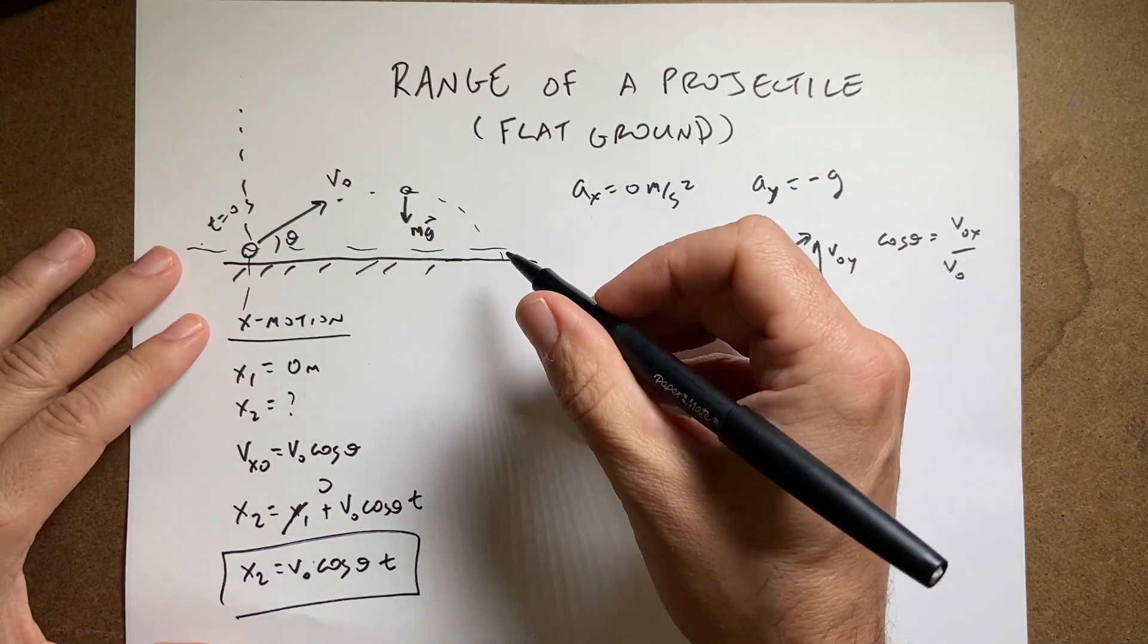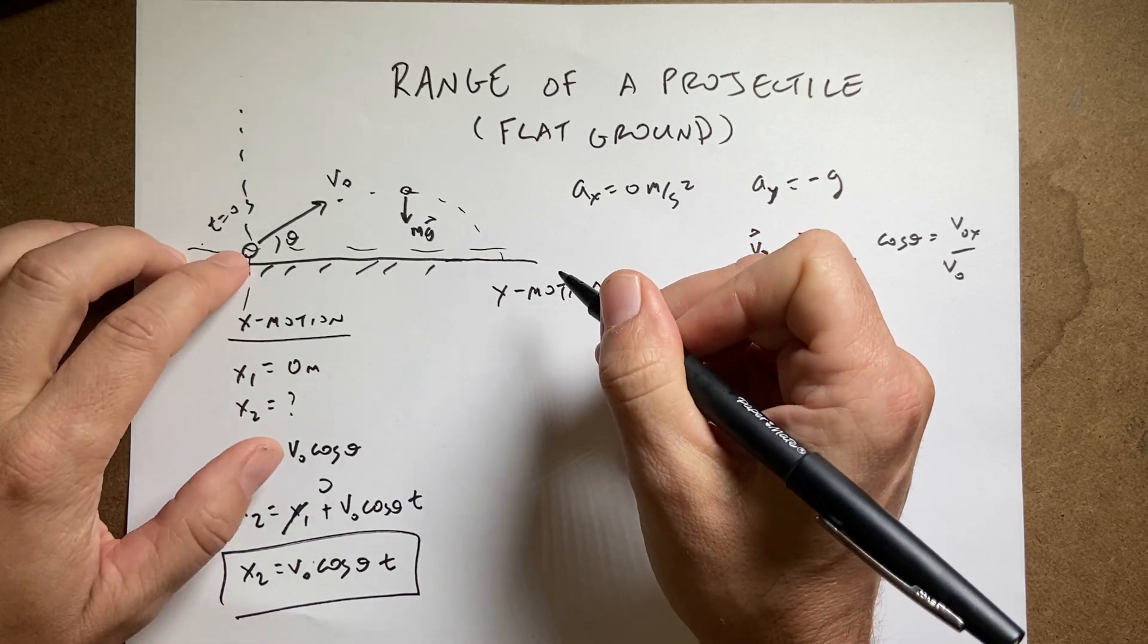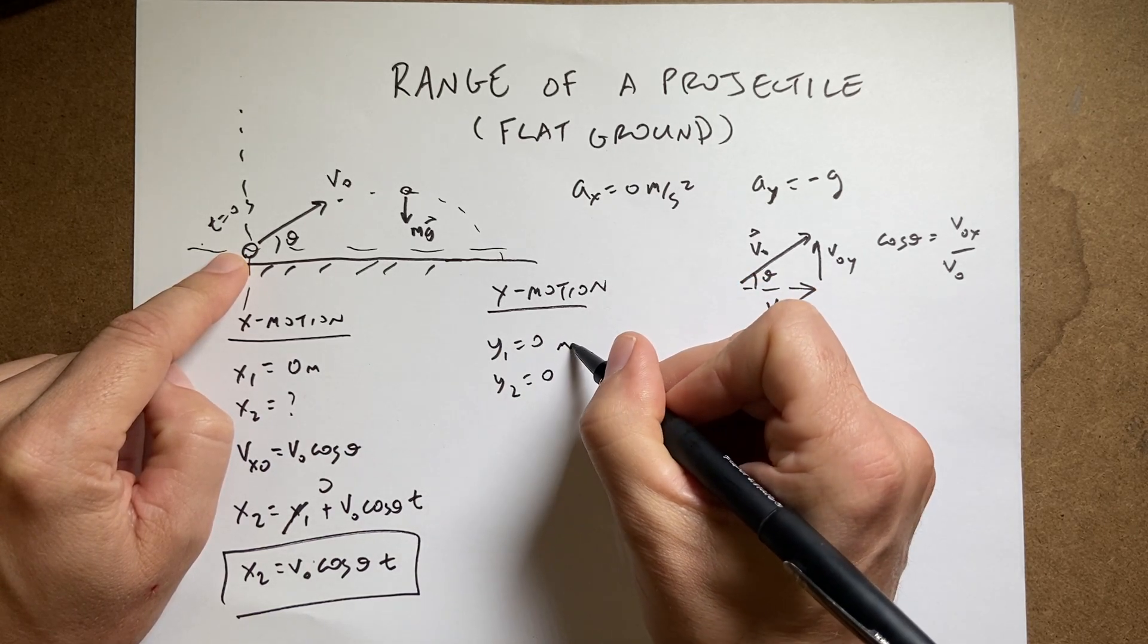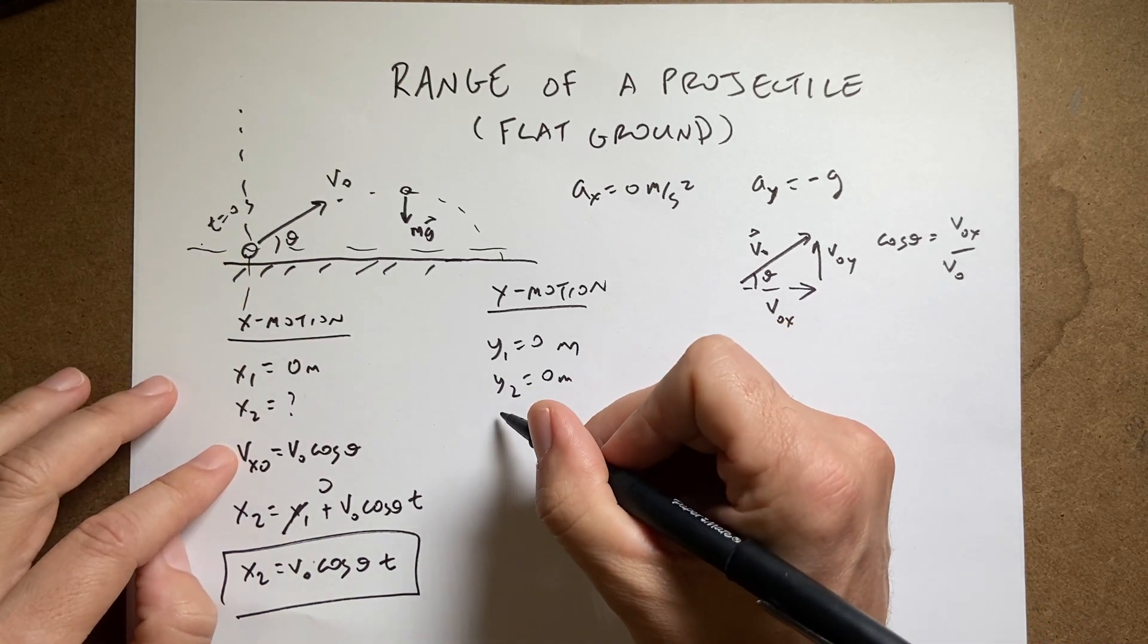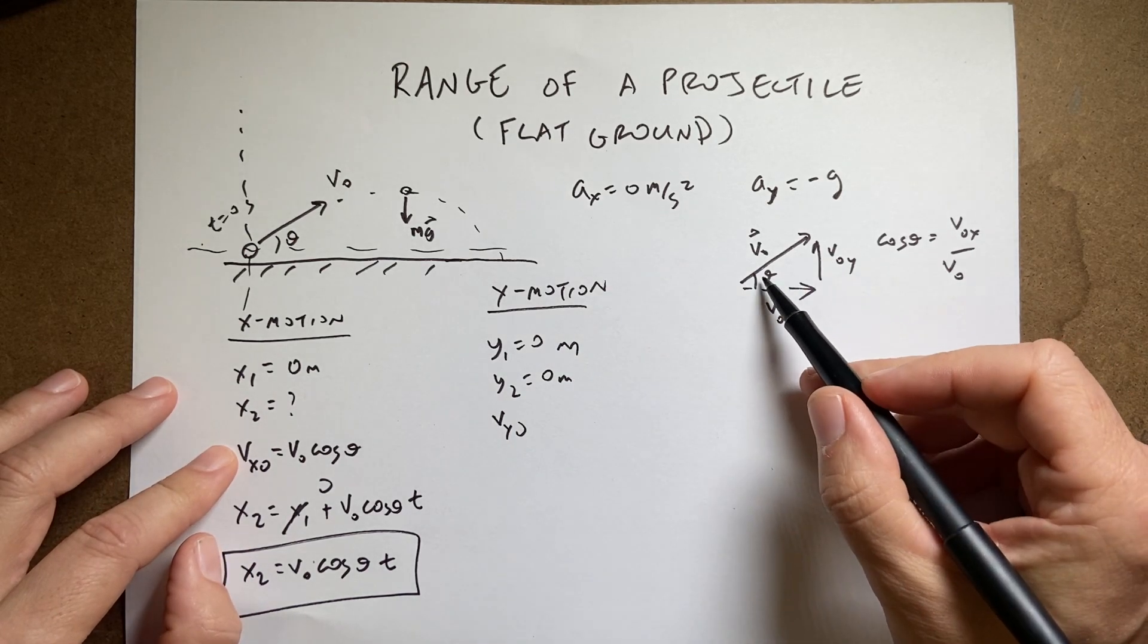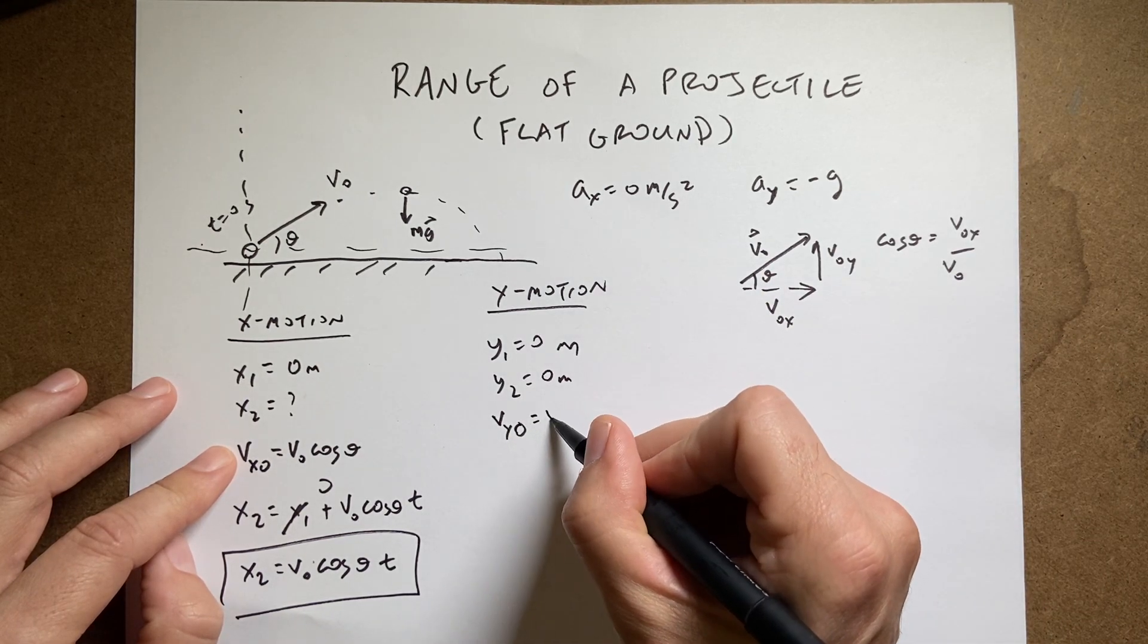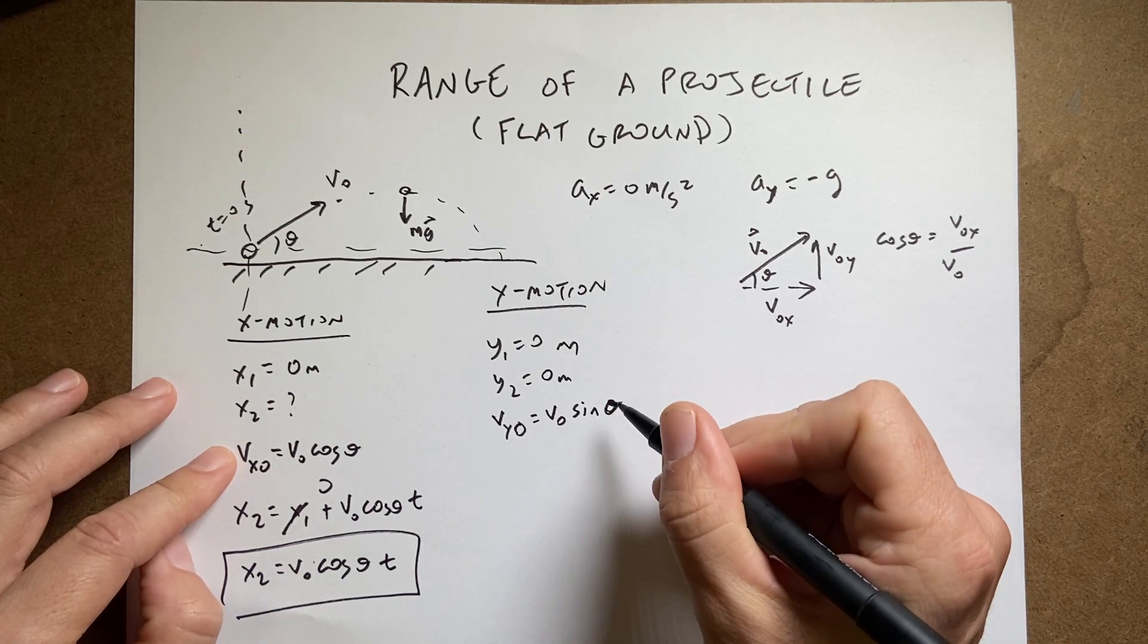Okay, so let's look at the y motion to find the time. I'm going to start, assume it starts at y1 equals zero meters. It's going to end at y2 equals zero meters, because it's going to end and start at the same position. The initial y velocity vy0 over here, I'm going to say the sine of theta times v0 is going to be the initial y velocity. So it's going to be v0 sine theta. That's a theta.